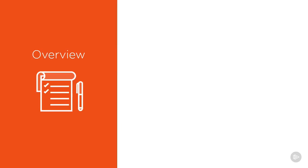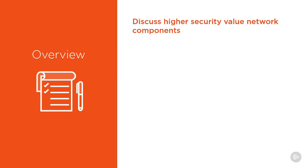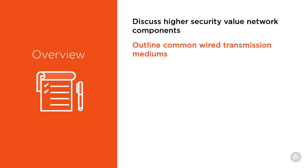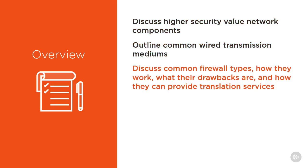In this module, we'll discuss high security value network components, then we'll outline common wire transmission mediums, as well as discuss common firewall types, how they work, what their drawbacks are, and how they can provide translation services.